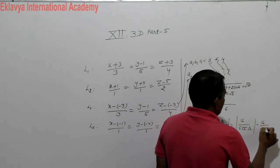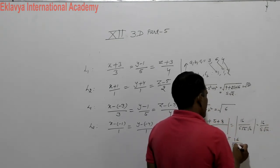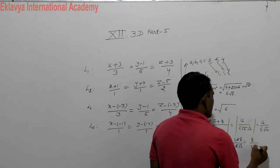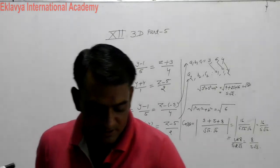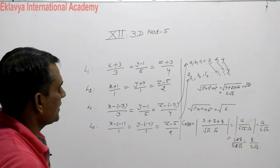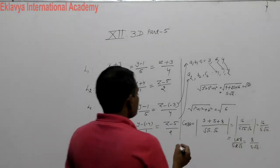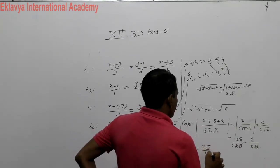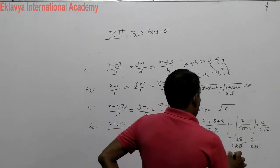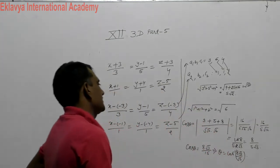We can write this as 16 over 5 root 12. Simplifying root 12 as 2 root 3, and canceling the 2, we get 8 over 5 root 3. Rationalizing the denominator by multiplying by root 3 over root 3, we get 8 root 3 over 15. So cos theta equals 8 root 3 over 15, which implies theta equals cos inverse of 8 root 3 over 15. This is the angle between these two lines.